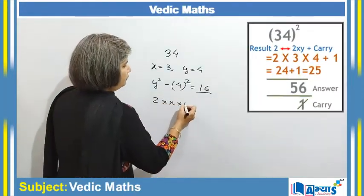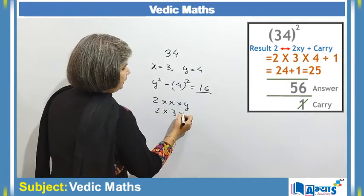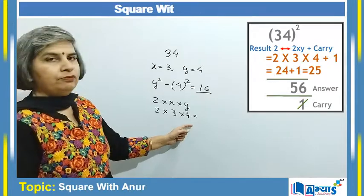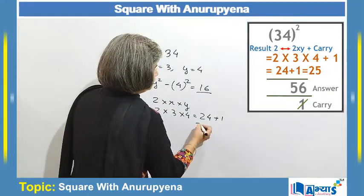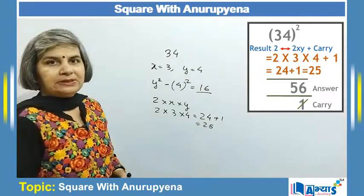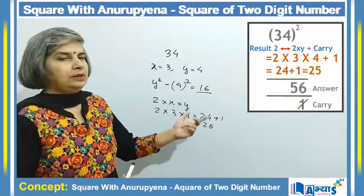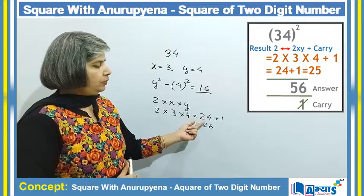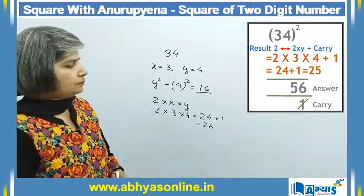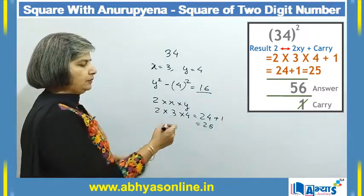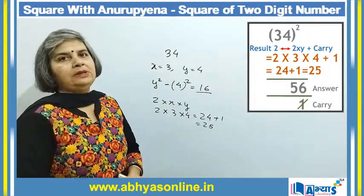In the next step, I multiply x with y and double the result — that is, 2 × x × y. So 2 × 3 × 4 = 24. I then add the previous carry of 1, giving 25. From 25, the unit digit 5 is prefixed in the answer, so the answer so far is 56, and 2 is the new carry.